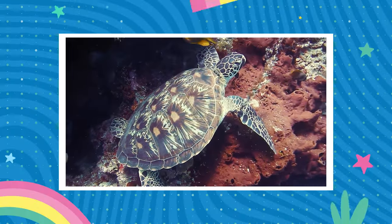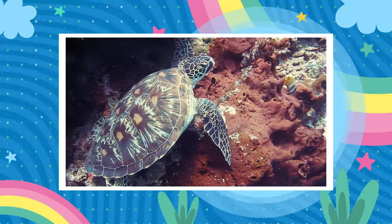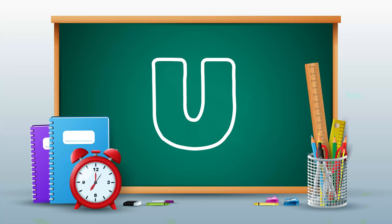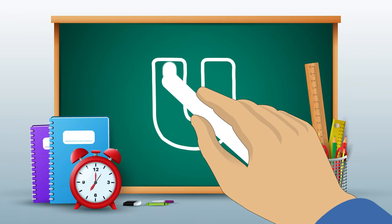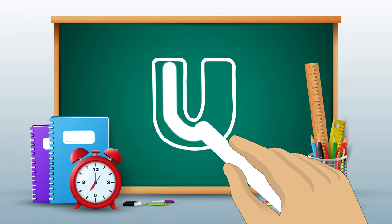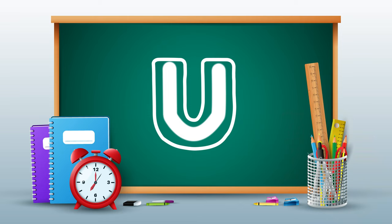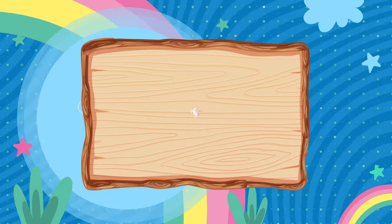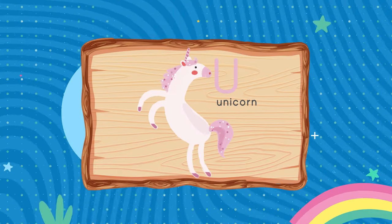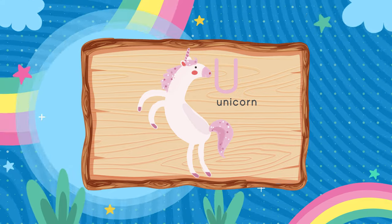Let's move on to the next letter, the letter U. Pull down, around and up. U is for Unicorn.